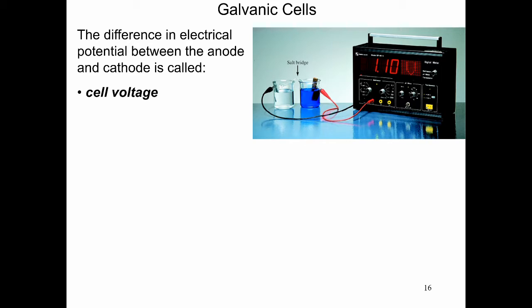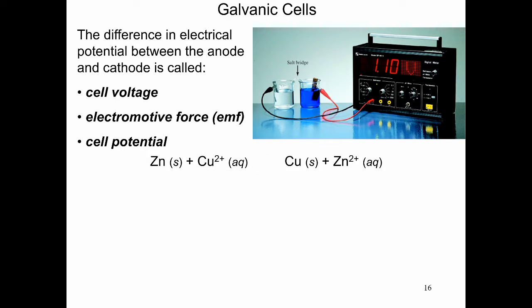How does this current flow? You have what you call an electromotive force or a cell voltage. That's the difference in electrical potential between the anode and cathode. Some people call it cell voltage because the unit is volts. A more formal name is electromotive force because it's the force that moves electrons. It's also called cell potential — the potential of the cell to react. For example, here we have zinc and copper: zinc is being oxidized and copper is being reduced.